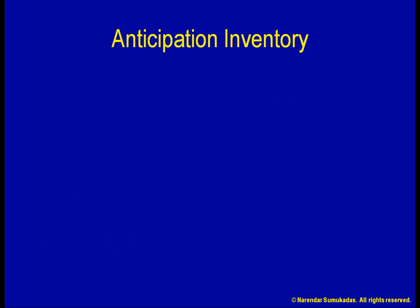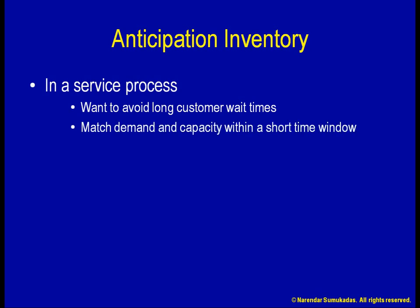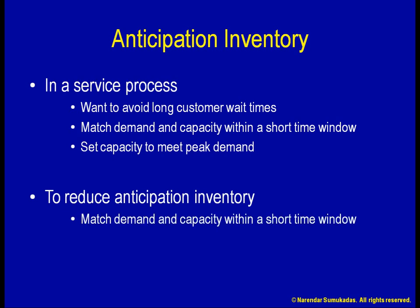Similarly, suppose we are producing tomato ketchup. We buy tomatoes in large quantities during the growing season in anticipation of future use. Given that anticipation inventory is used to bridge the time gap between when demand and capacity happen, the greater the time shift, the greater the amount of inventory needed. With many service processes, to avoid long customer waits, we try to match our demand and capacity within a short time window. To do that, we have to set our capacity to meet the peak rather than average demand. Applying the same principle, we can reduce anticipation inventory by matching demand and capacity within a narrower time window.